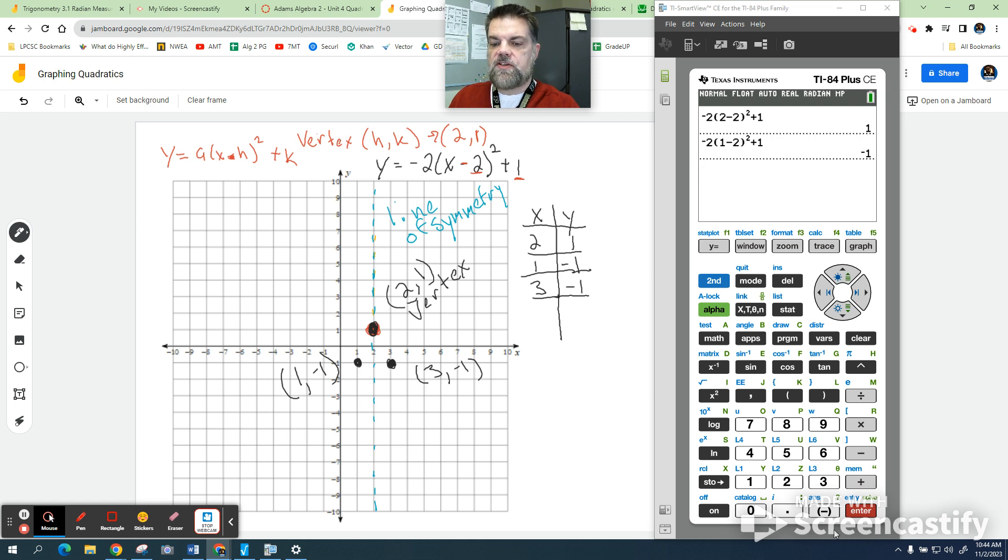Plug it in the calculator. So I'm going to say negative 2. My x value, in this case, is going to be 3, minus 2. That's the rest of the formula. Hey, it does equal negative 1. How about that?